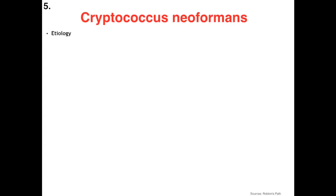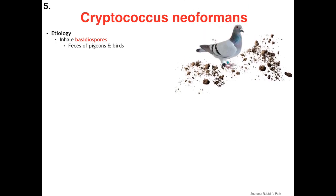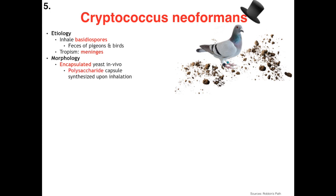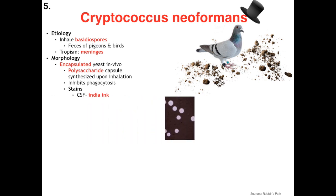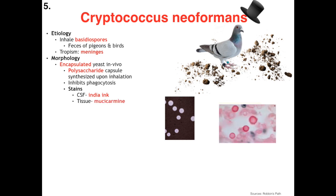Finally we've made it to Cryptococcus neoformans. His etiology begins with inhalation of the basidiospores found in the feces of pigeons and birds. His tropism is for the meninges. Morphologically, this is the only encapsulated yeast tested — he has a thick polysaccharide capsule synthesized upon inhalation which inhibits phagocytosis. The gold standard for diagnosis from CSF is India ink stain — the thick capsule does not allow absorption of the stain, referred to as negative staining. In tissue samples the gold standard is mucicarmine stain, which is absorbed by the capsule. His cell wall contains melanin and he is urease positive.